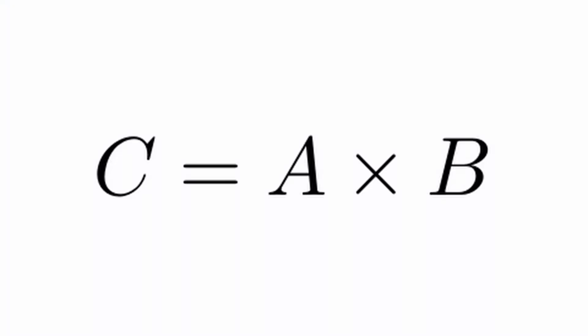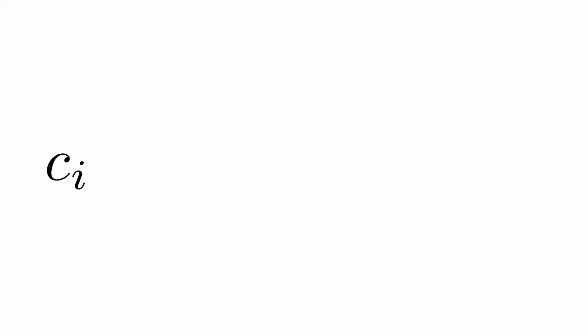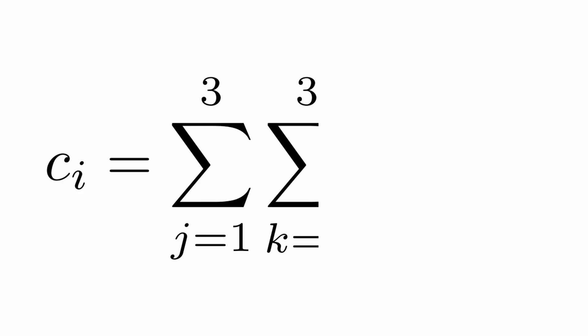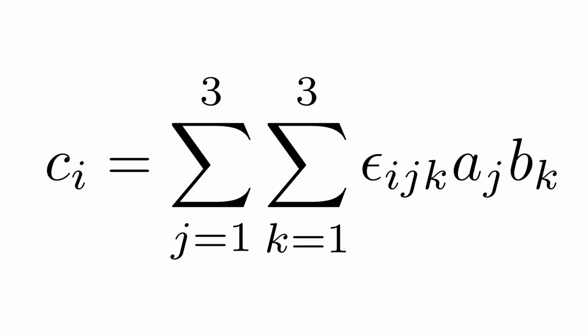The most important use of the Levi-Civita symbol is to define the cross product between two vectors. With c equals a cross b, the components of c can be written as c sub i equals the sum from j equals 1, 2, 3 and k equals 1, 2, 3 of epsilon ijk times a sub j times b sub k.